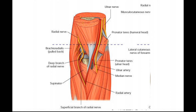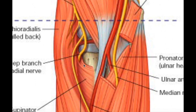The superficial branch of the radial nerve really doesn't do a whole lot until it gets to the hand, and we're going to talk about that in a few minutes. The deep branch is what we want to talk about more here. Here's our deep branch of the radial nerve — you can see right here that it's going to enter into this little tunnel. This muscle right here is called the supinator muscle; it's a deep muscle of the anterior forearm.